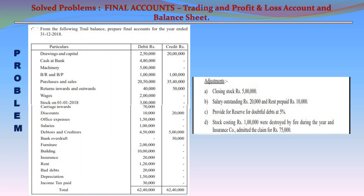Office expenses: 1,50,000. Salaries: 1,00,000. Debtors: 4,50,000. Creditors (credit): 5,00,000. Bank overdraft (credit): 30,000. Furniture (debit): 2,00,000. Buildings (debit): 10,00,000.